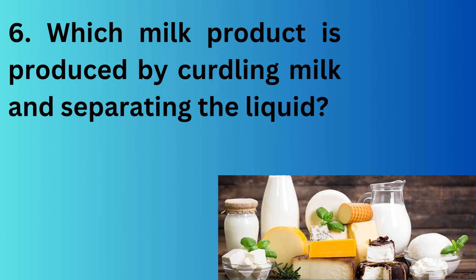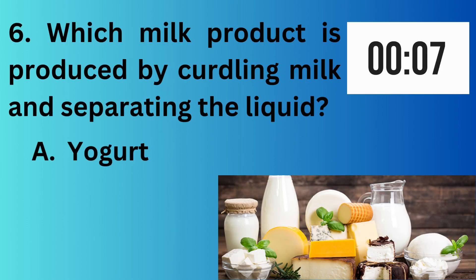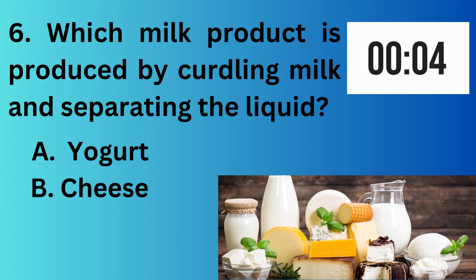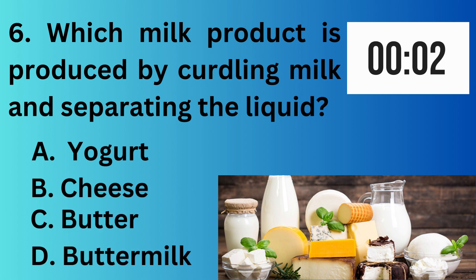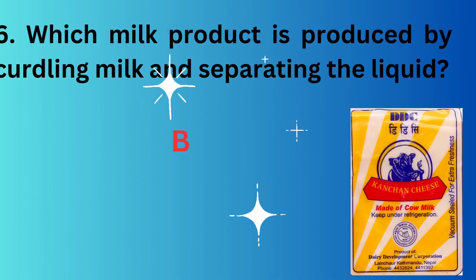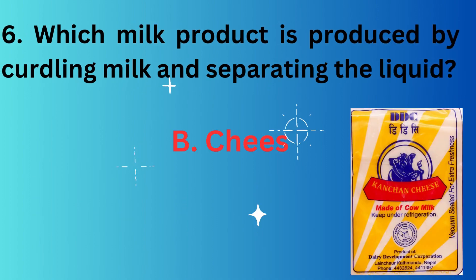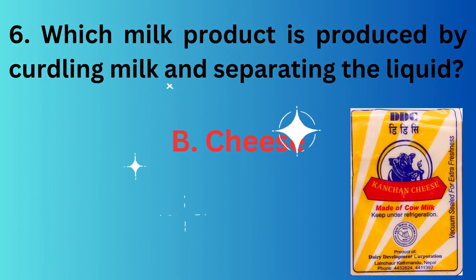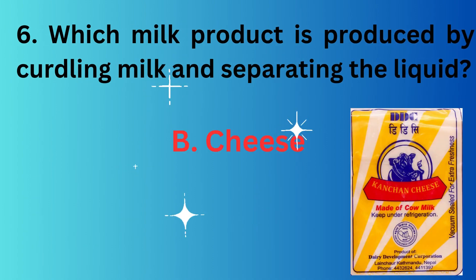Which milk product is produced by curdling milk and separating the liquid? A. yogurt, B. cheese, C. butter, D. buttermilk. The correct option is B, cheese.